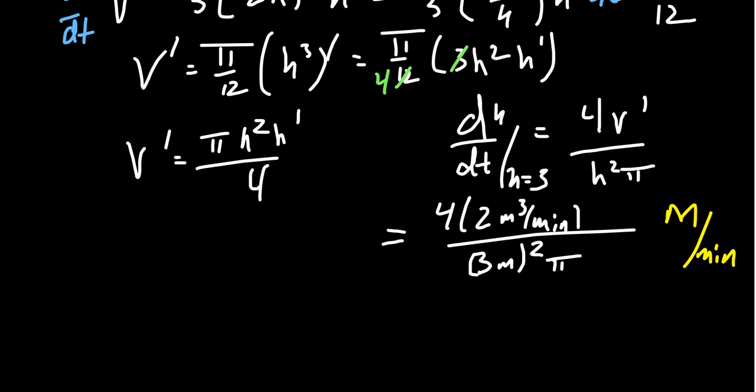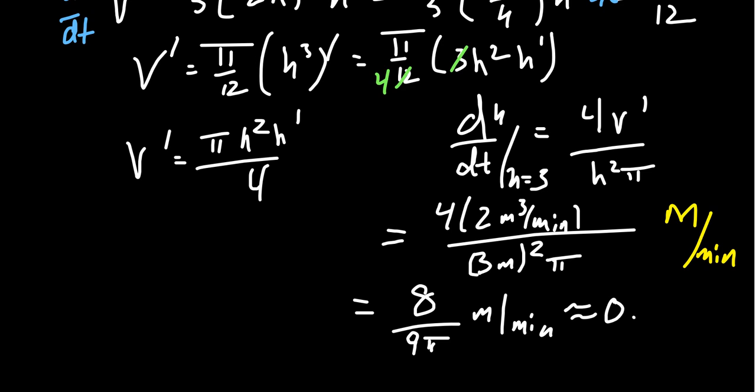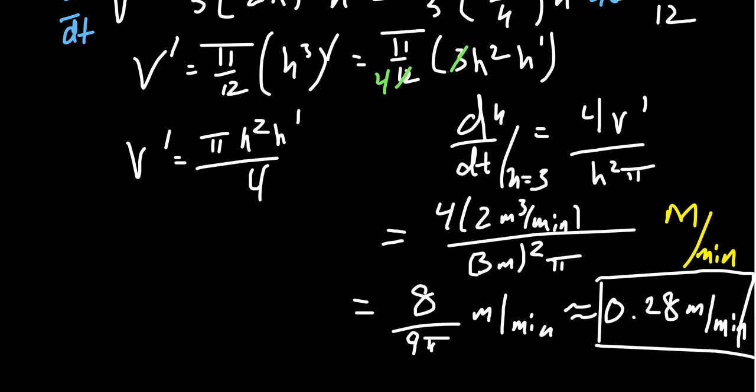Continuing the calculation: 4 × 2 = 8 in the numerator, and 3² = 9 in the denominator, giving dh/dt = 8/(9π) ≈ 0.28 meters per minute. In related rates problems, when the equation relating your known and unknown variables involves an intermediate variable like radius, you need an additional relationship — here a similar triangle argument — to substitute it out before differentiating.